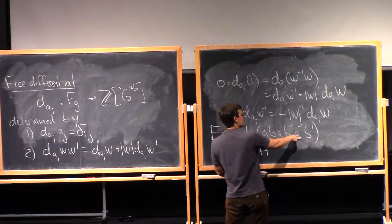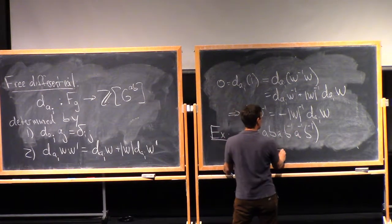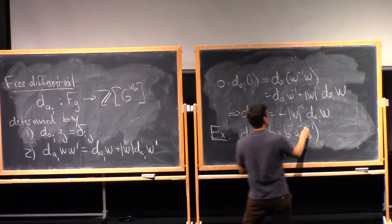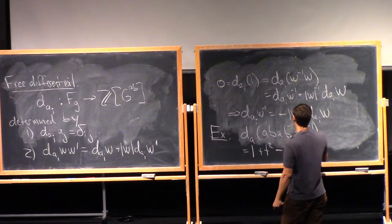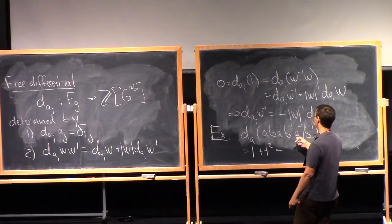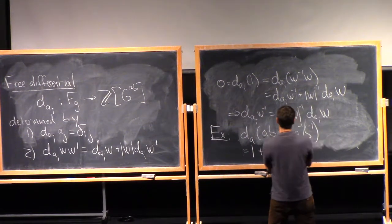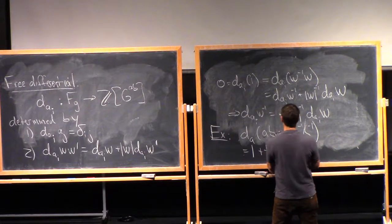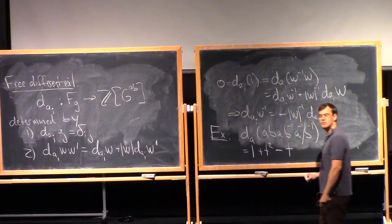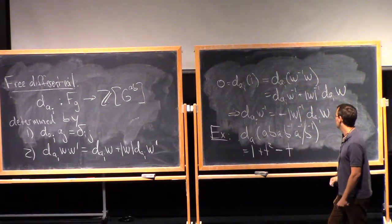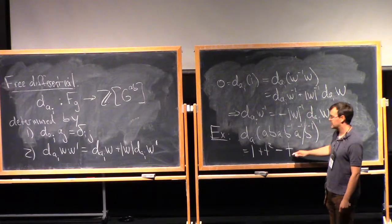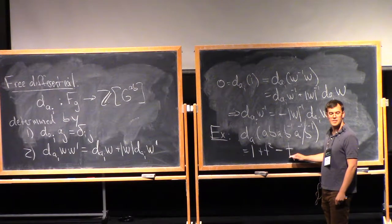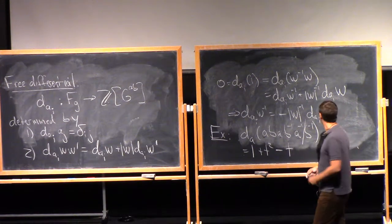Here, this is an A inverse, so I need a minus sign, and I abelianize everything before it, including itself. This gives me a T. And lo and behold, that's the same polynomial we had before.